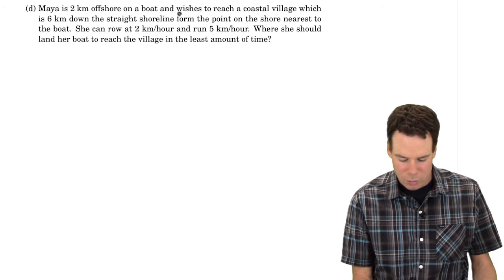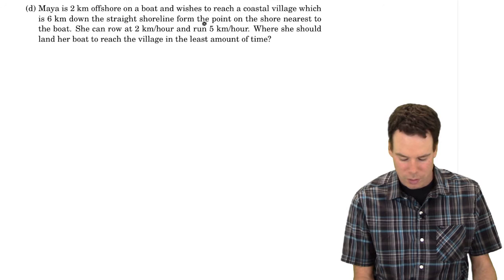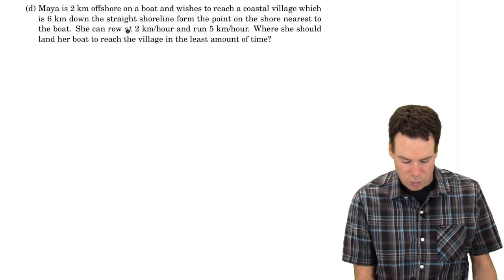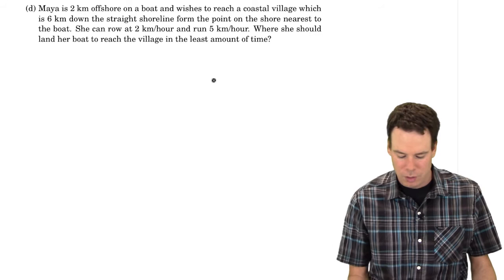In this last example we've got Maya is two kilometers offshore on a boat and wishes to reach a coastal village which is six kilometers down the straight shoreline from a point on the shore nearest to the boat. She can row at two kilometers per hour and run at five kilometers per hour. Where should she land her boat to reach the village in the least amount of time?